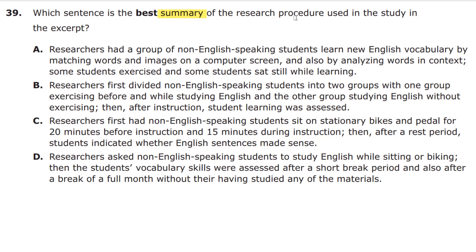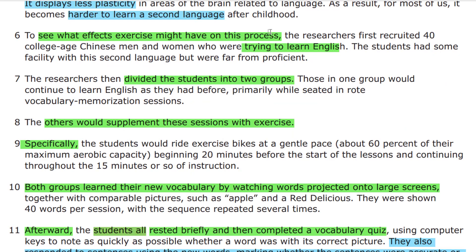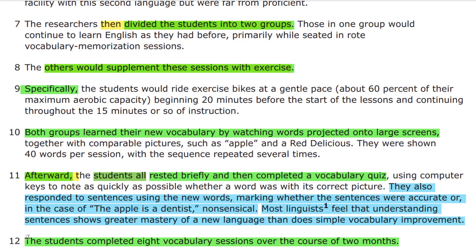Let's go back and check how the items progress through the actual passage. The process of the study begins in paragraph six. They first recruited 40 college-age students who are trying to learn English, then divided them into two groups — some did not exercise, others did, and they described how the ones who exercised did so. Both groups then learned new vocabulary words by watching words on a screen and trying to put them into context of sentences. This took over eight vocabulary sessions over the course of two months.